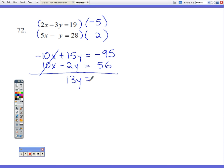Negative 95 plus 56 is negative 39. Now I'm going to divide by 13, and I get y equals negative 3.